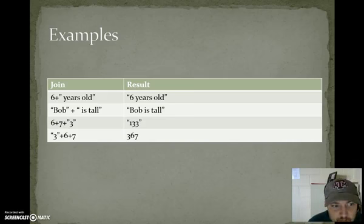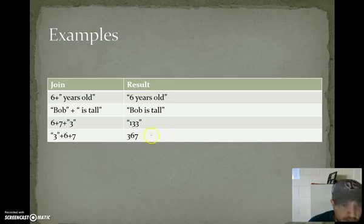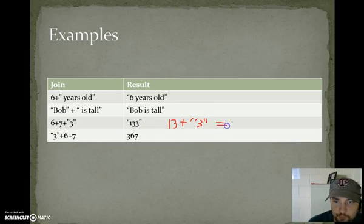Here we have six plus seven. On the left, we have an int. On the right, we have an int. Six plus seven is 13. So that part's finished. So what we really have is 13 plus three. That produces 13 joined with three joined concatenation. It just tacks it on the end. 133.